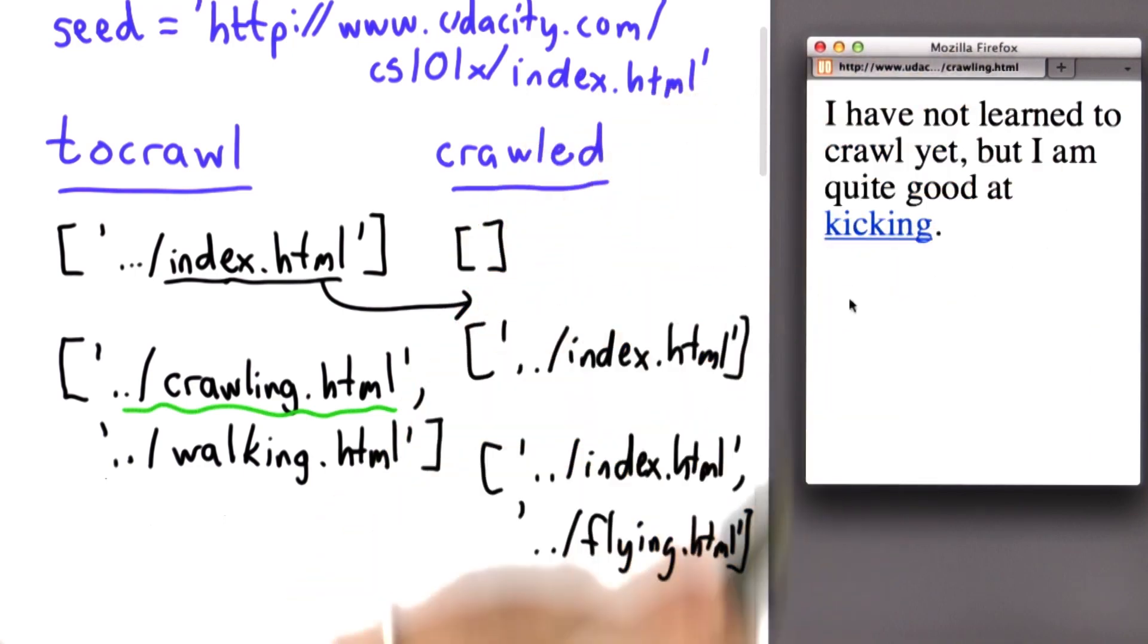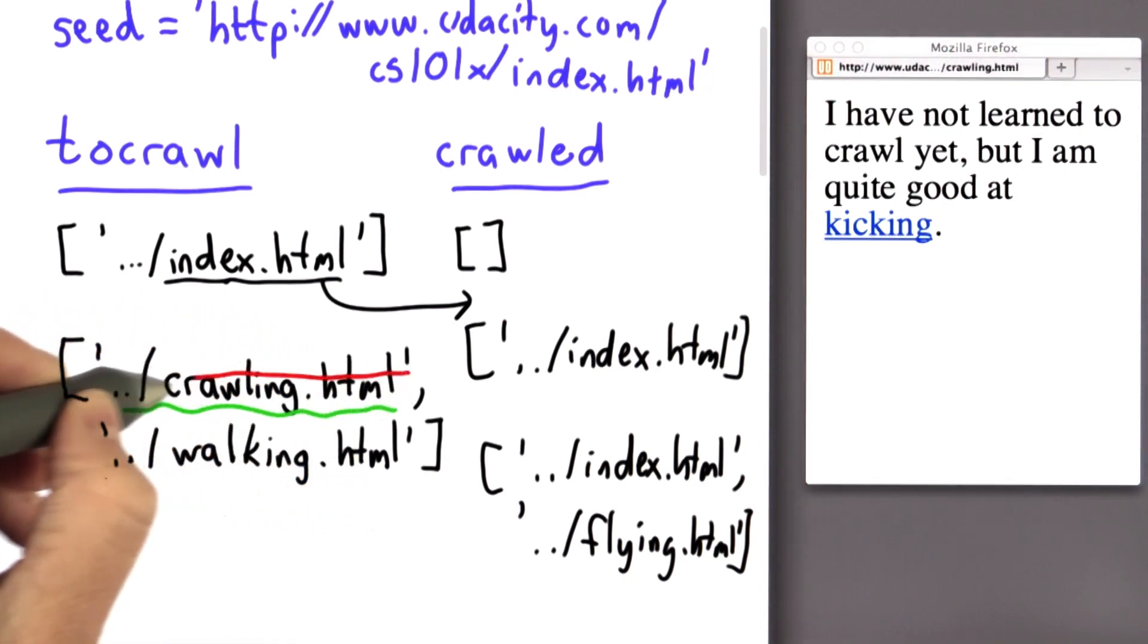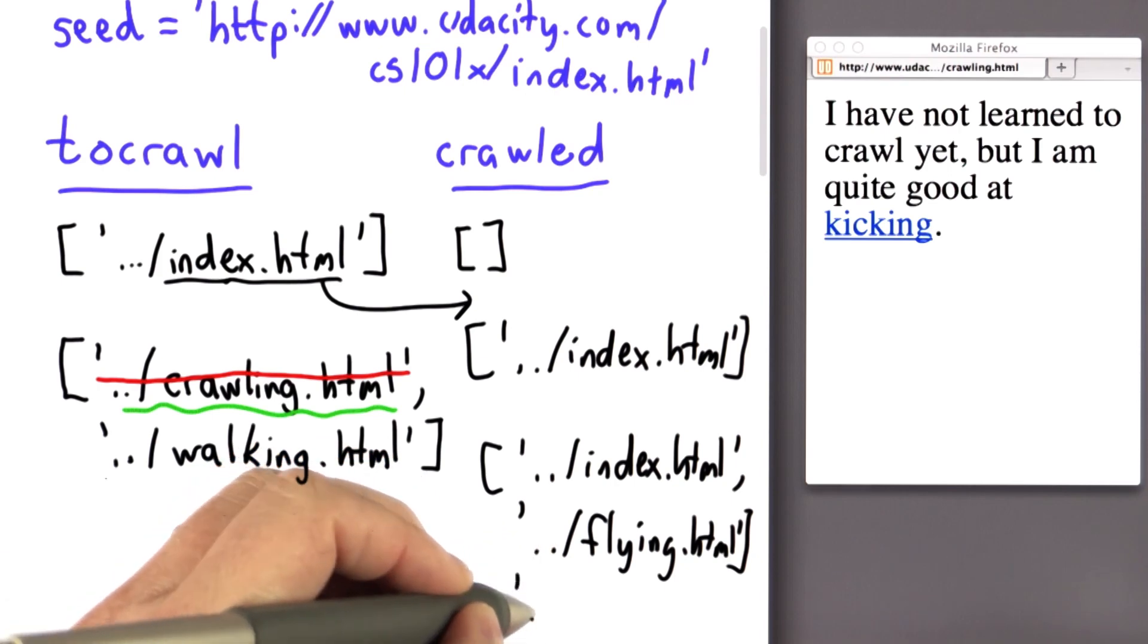So to follow crawling, we're going to follow the same algorithm we did with flying. So that removes this link from the to crawl list, adds it to the crawled list. So we're done crawling, crawling.